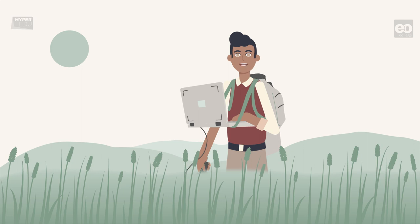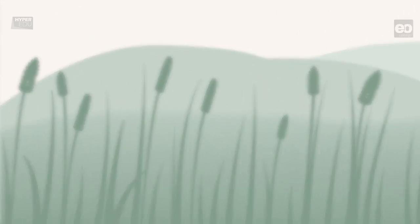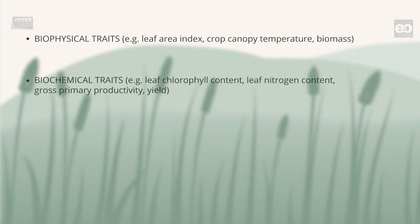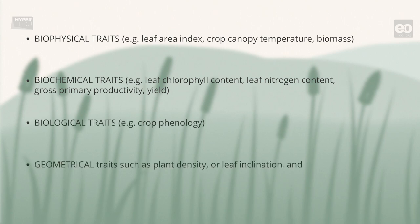Functional vegetation traits are often continuous in nature and can be grouped into diverse subgroups. We differentiate biophysical traits, for example leaf area index, crop canopy temperature or biomass; biochemical traits, for example leaf chlorophyll content, leaf nitrogen content, gross primary productivity and yield; biological traits, for example crop phenology; geometrical traits such as plant density or leaf inclination; and geophysical traits such as soil electrical conductivity.